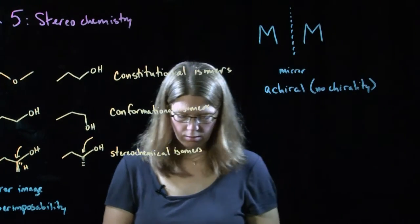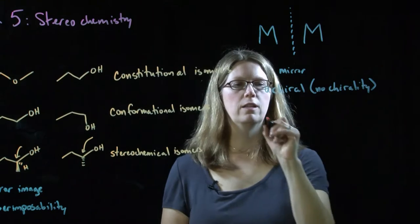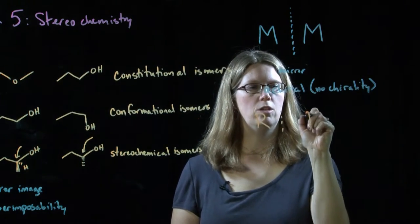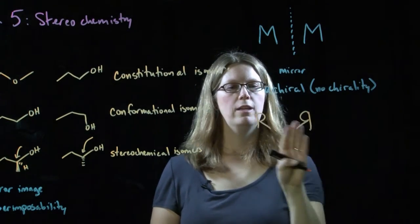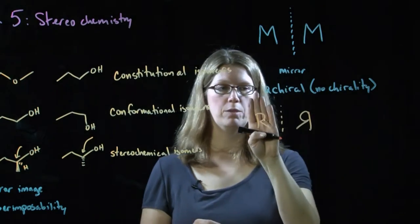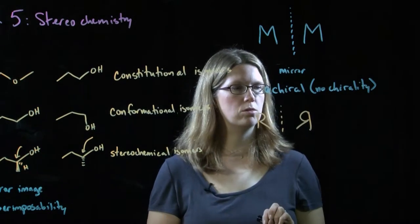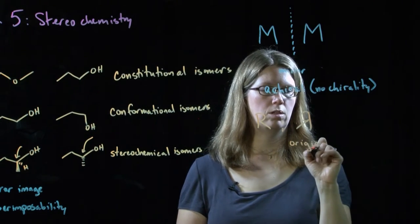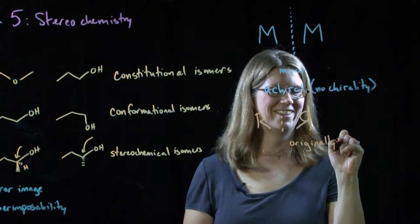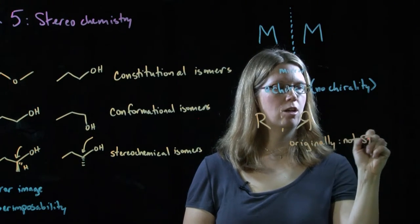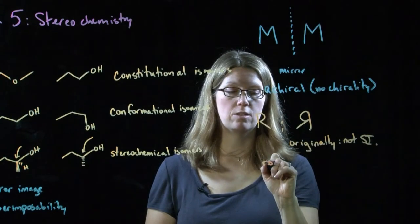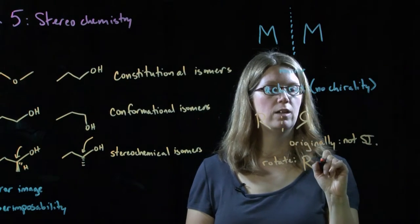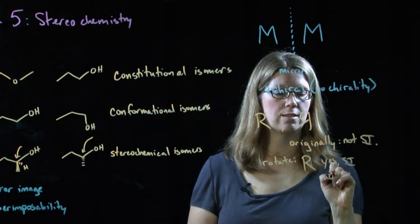Consider another example: the letter R. If I drew its mirror image and put that R over the other one, you would see that it is not superimposable. But remember that molecules can rotate, and if molecules can rotate then that R can rotate as well — we could just turn it around. And now it is superimposable, and so it is achiral.